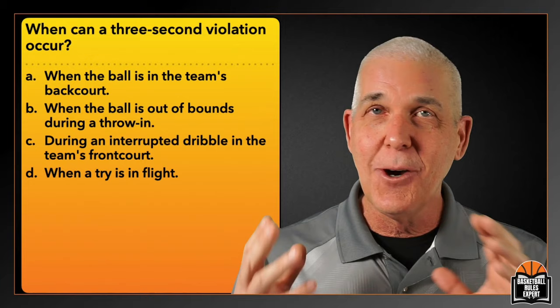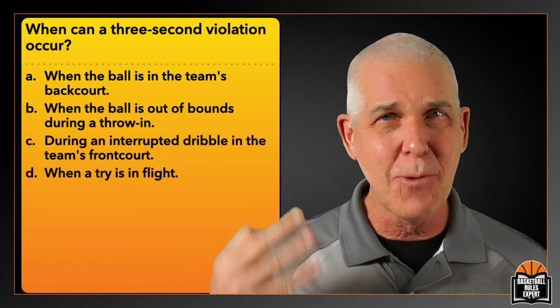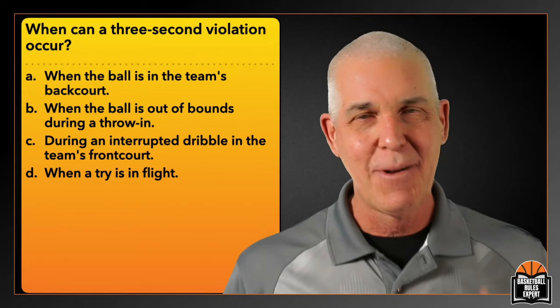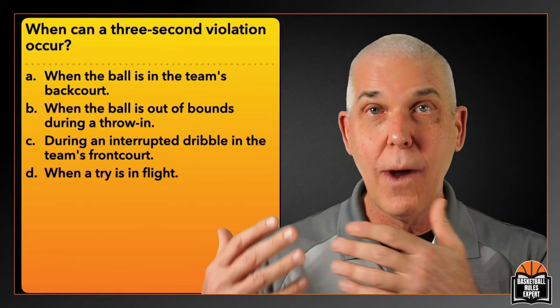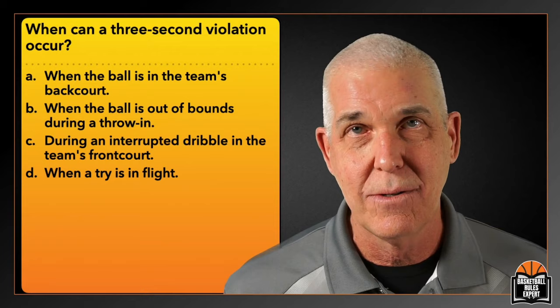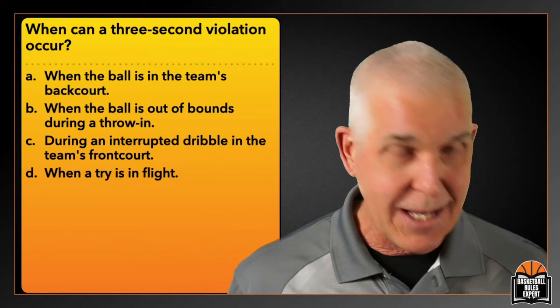This one goes out to all those parents in the stands yelling 'Three seconds! Three seconds!' with a complete misunderstanding of the rule. A three-second violation may only occur when the ball is in team control in the frontcourt. So in A, when the ball is in the team's backcourt, we cannot have a three-second violation. When the ball is out of bounds during a throw-in — no, we cannot have a three-second violation.